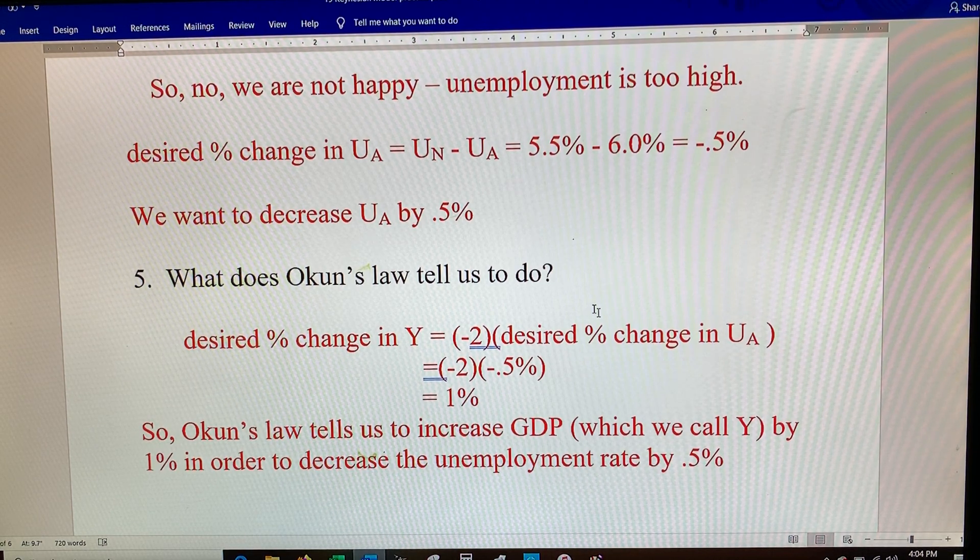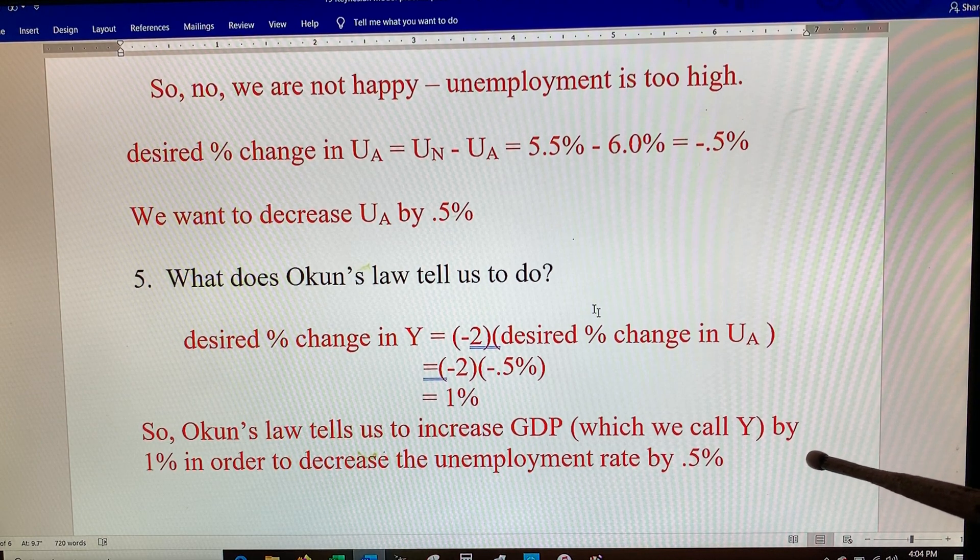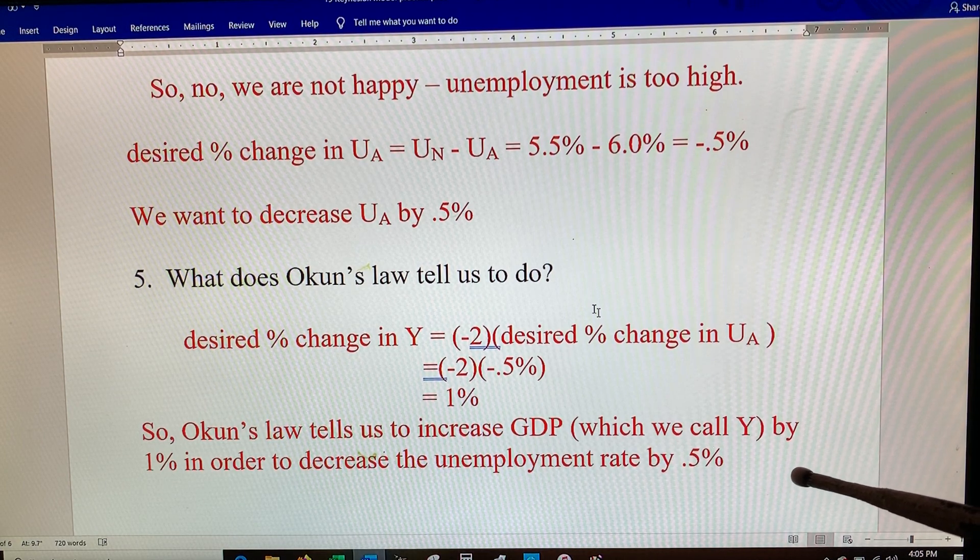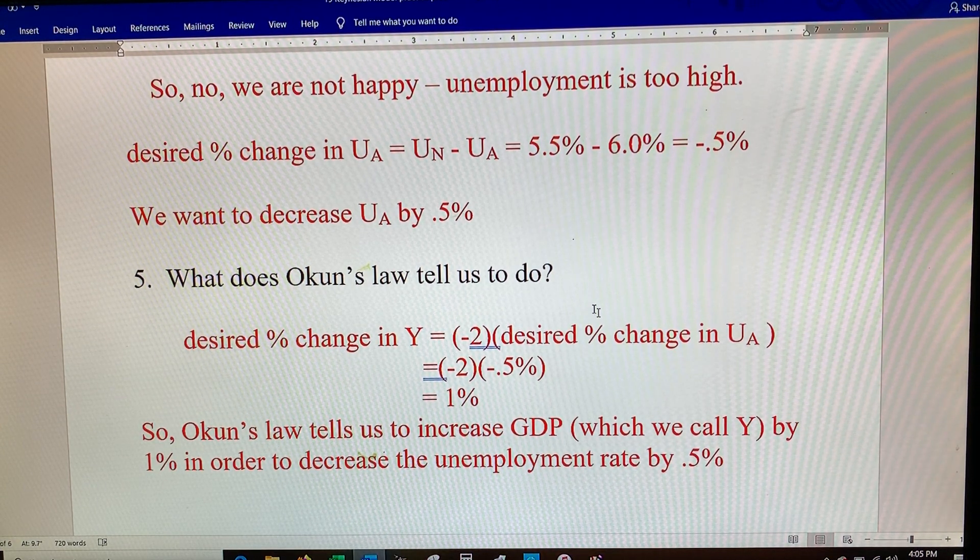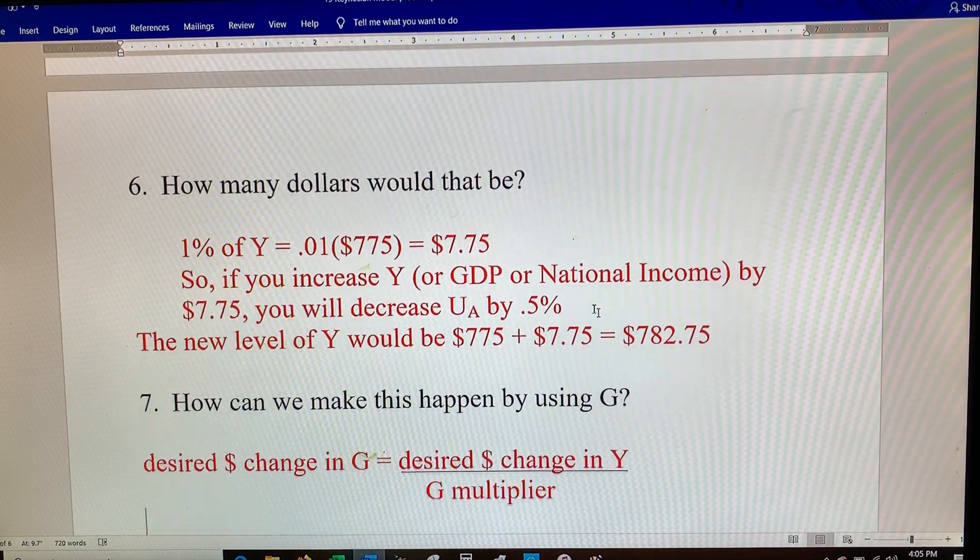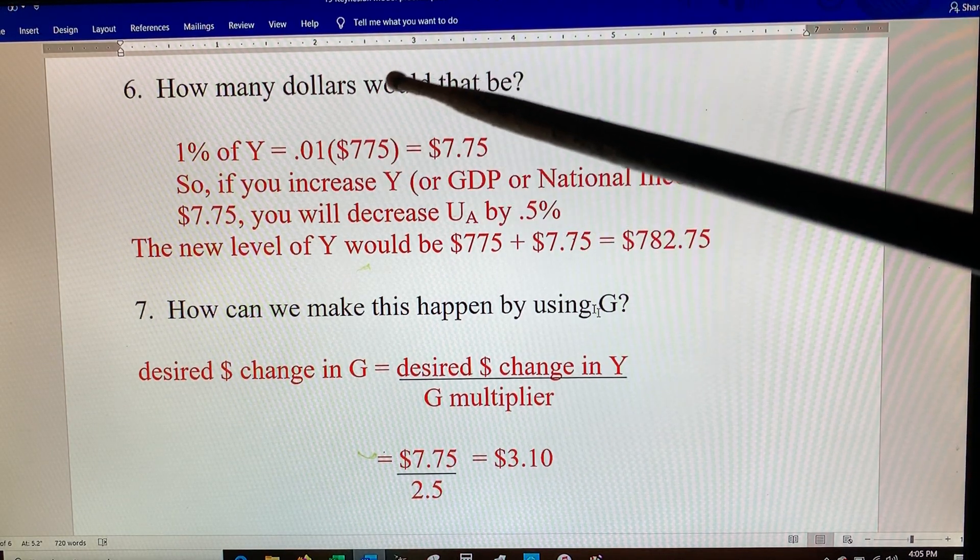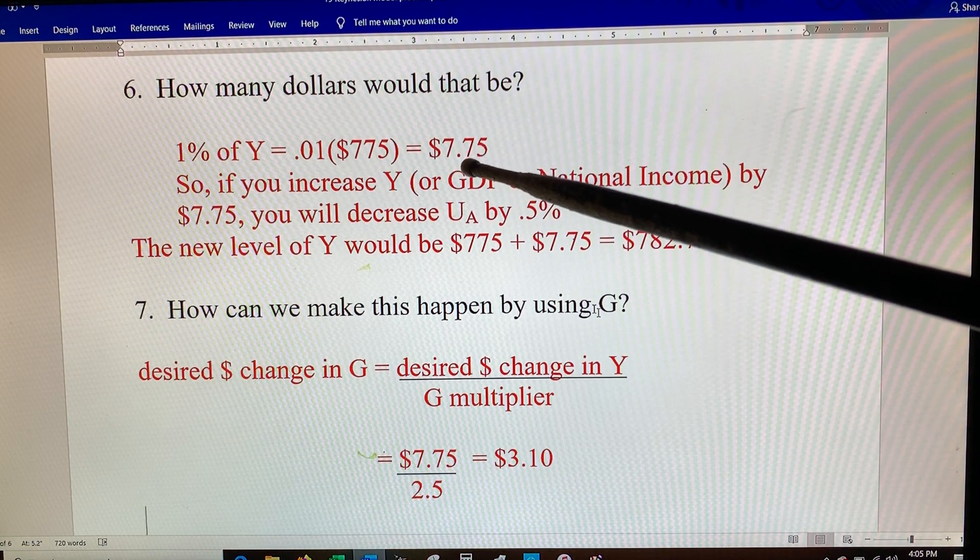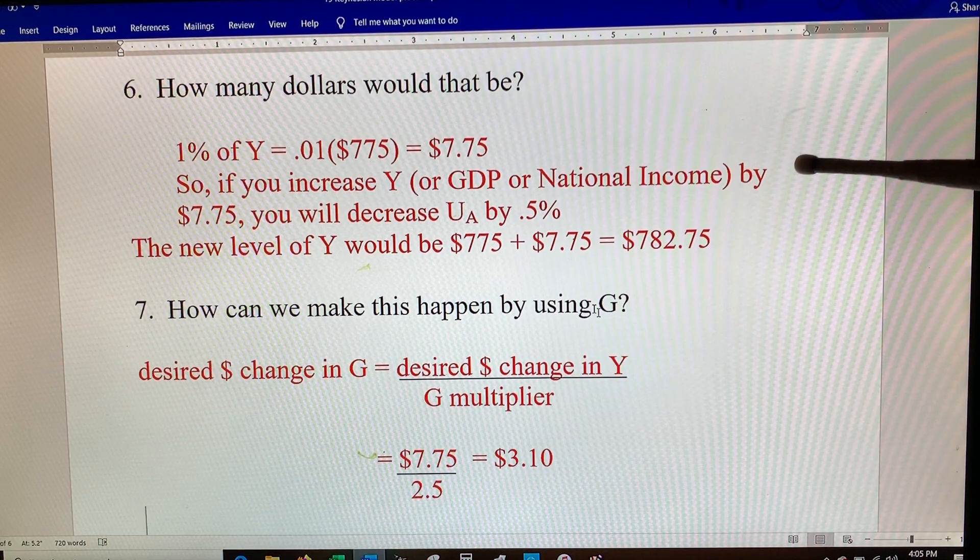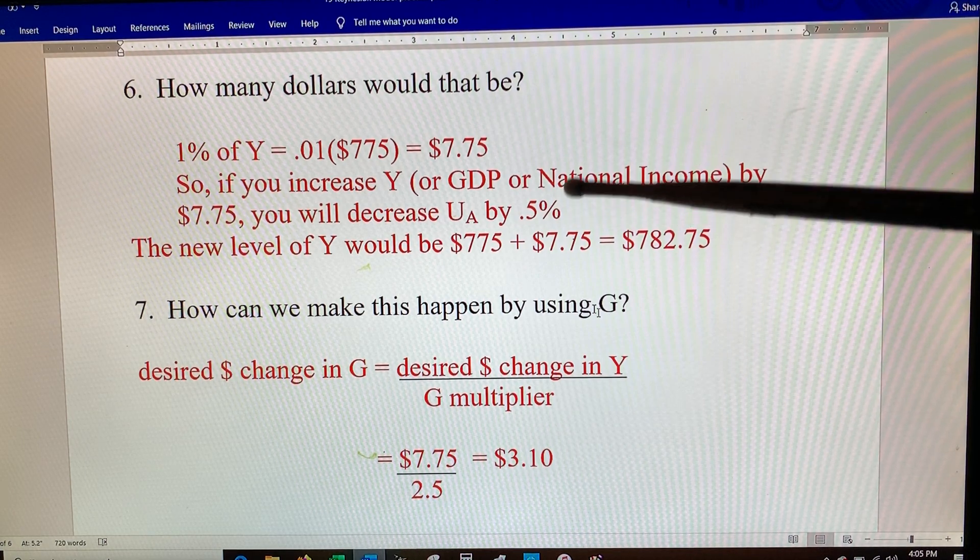So Okun's law tells us to increase GDP, which we're calling Y here in this model, by one percent in order to decrease the unemployment rate by half a percent. How many dollars would that be? Well, we know our GDP is 775, so you'd want 1% of that which would be seven dollars and 75 cents. So if you were to increase GDP or Y by 7.75, you would decrease unemployment by the half percent that you want.